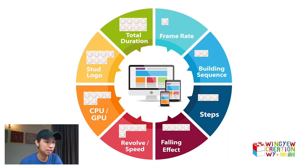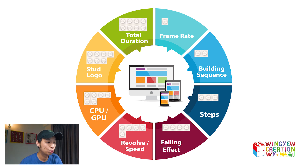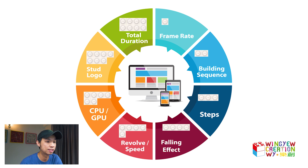So from here you can see there are eight different settings I would like to talk about today. The first one is the frame rate, second is the building sequence, then the steps, the falling effect, the revolving effect and speed, the rendering difference between CPU and GPU, the outcome for the stud logo, and the impact of the total duration setting.